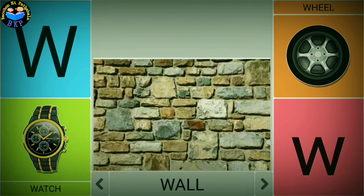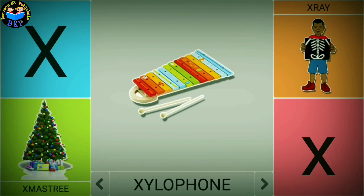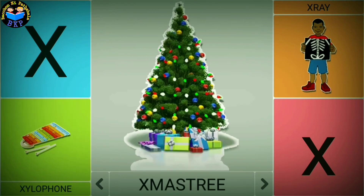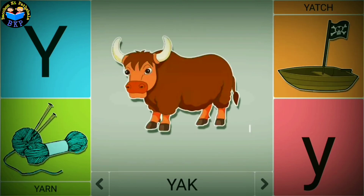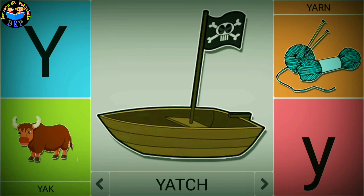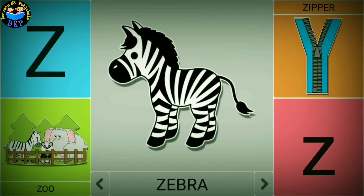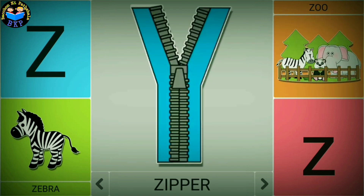W is for wall. W is for wheel. X is for xylophone. X is for x-ray. Y is for yak. Y is for yarn. Y is for yacht. Z is for zebra. Z is for zoo. Z is for zipper.